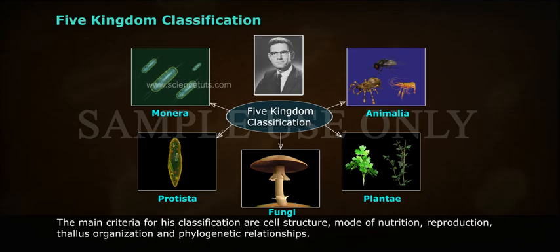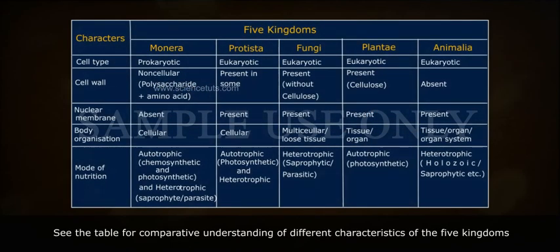The main criteria for his classification are cell structure, mode of nutrition, reproduction, thallus organization, and phylogenetic relationships. See the table for a comparative understanding of the different characteristics of the five kingdoms.